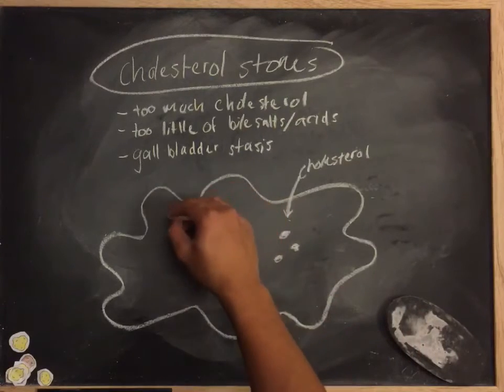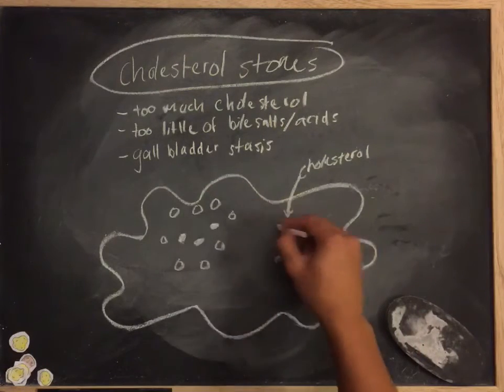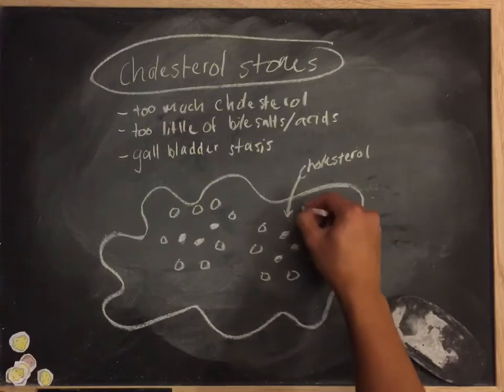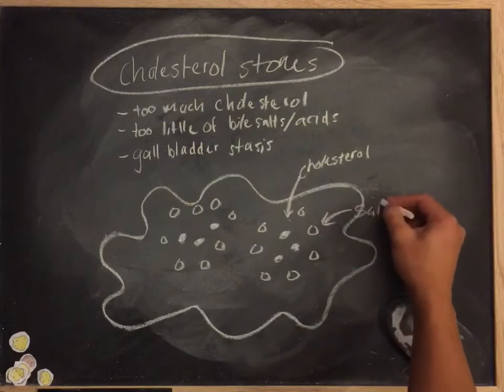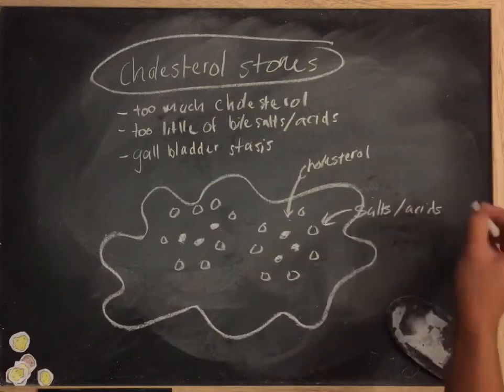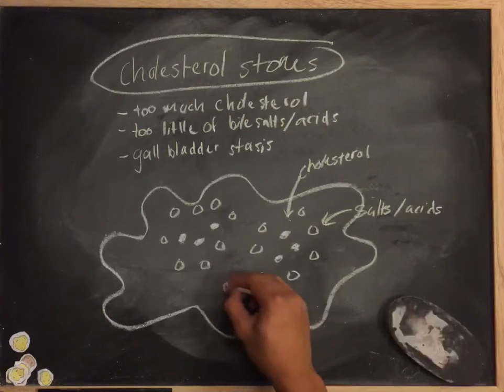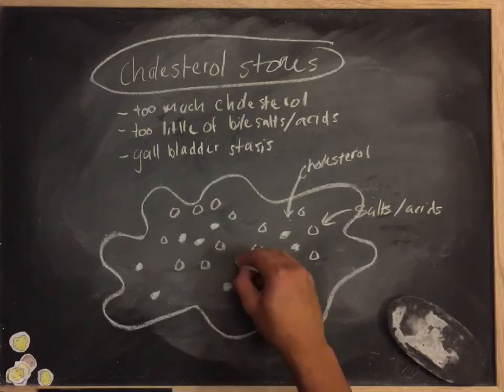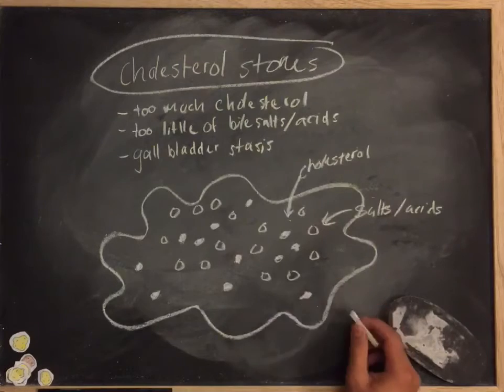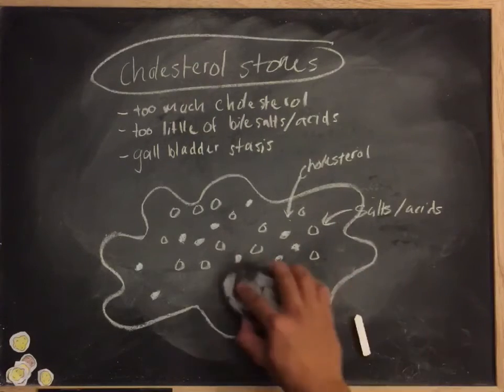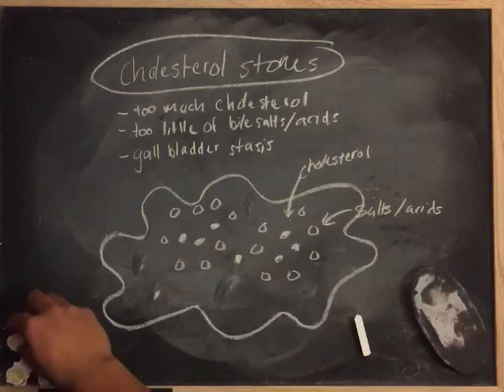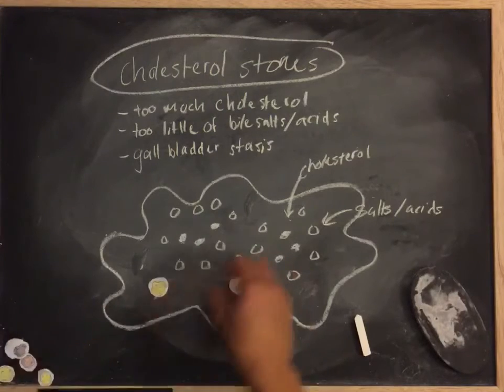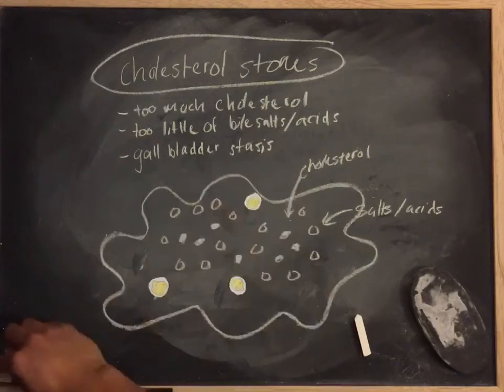Whether there is too much cholesterol in the bile or too little bile salts or acids being synthesized in the bile, it eventually leads to the cholesterol precipitating out as it cannot stay in solution without enough bile salts or bile acids. And the precipitation eventually leads to gallstones being formed.